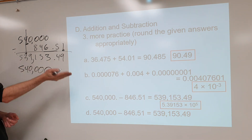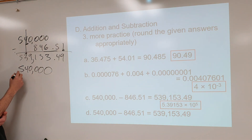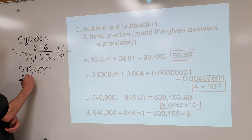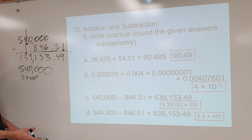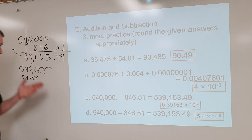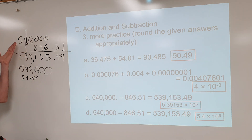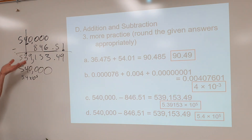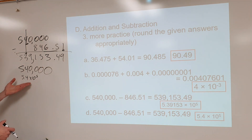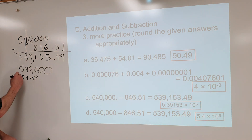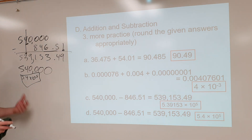When you round there, no decimal follows, so you don't bring it over. That's why it becomes 5.4 × 10⁵ — 540,000 without a decimal means those trailing zeros are not significant. Essentially we're saying the number is 540,000 ± 10,000; compared to that uncertainty, 846 doesn't cause a significant difference. Always box your final answers.